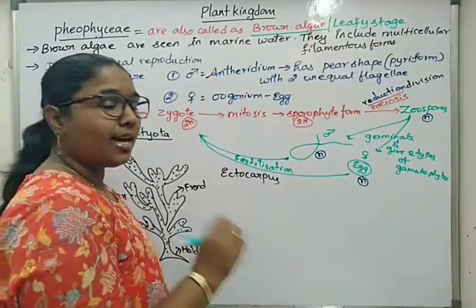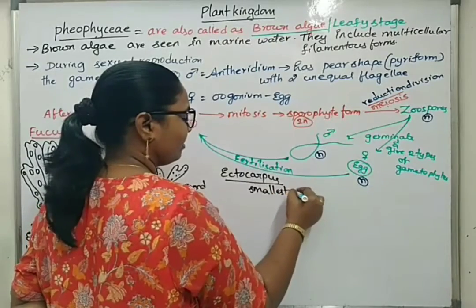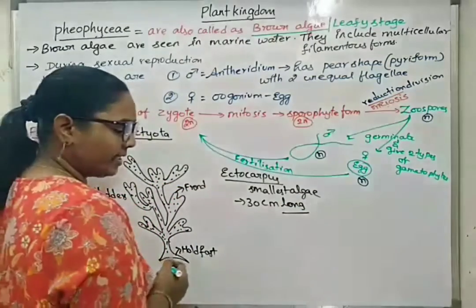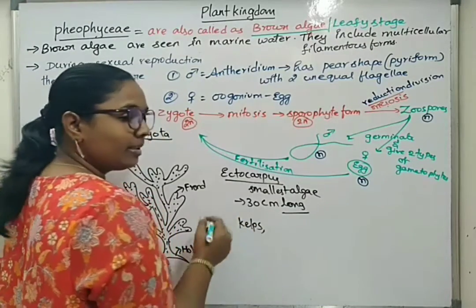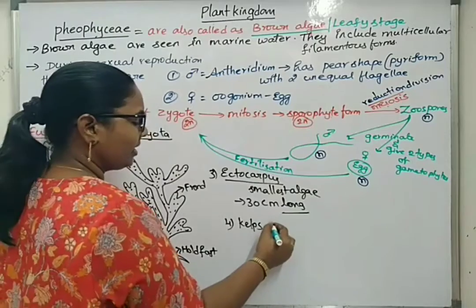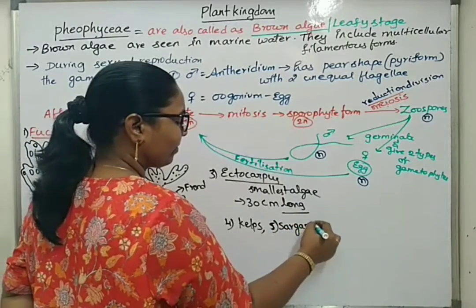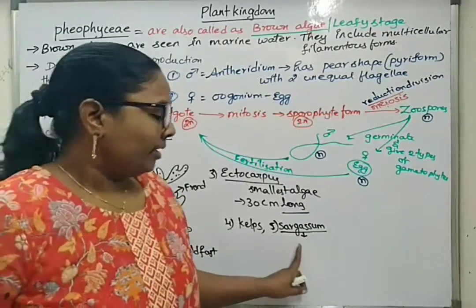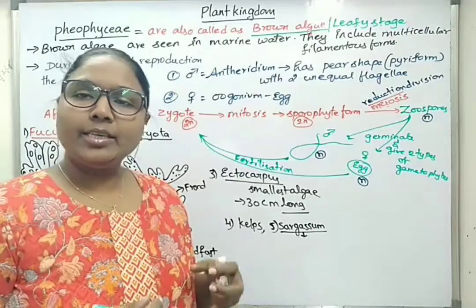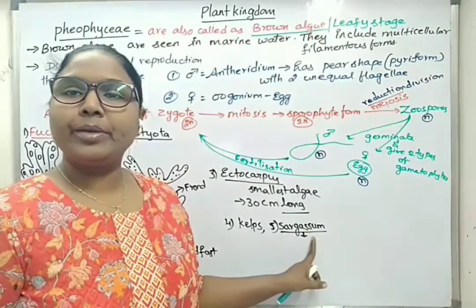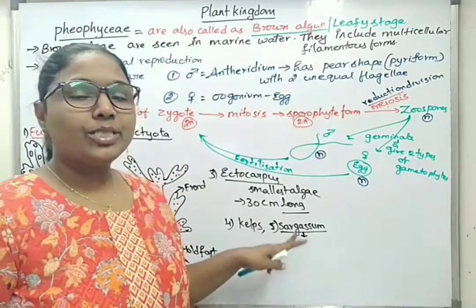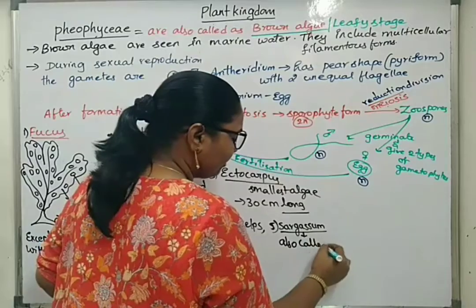In Dictyota, whenever a branch arises, it divides into two branches — 'Di' means two, hence the name Dictyota. Other example is Ectocarpus, the smallest algae, having about 30 cm length. Kelp is the largest or longest algae. Next is Sargassum, also called gulf weed, which grows for nearly 1000 km and occupies that area in oceans.